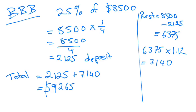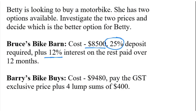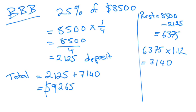So that's the first option. The second one is Barry's Bike Buys. So the cost is $9,480. We need to pay the GST exclusive price and then do four lump sums of $400.